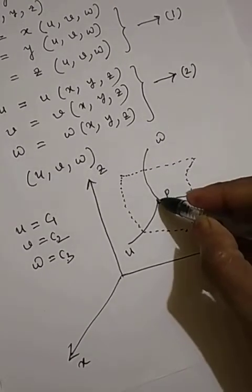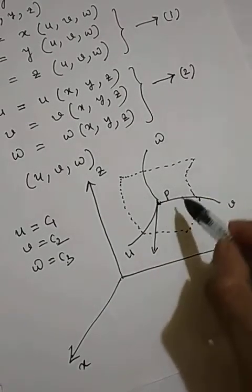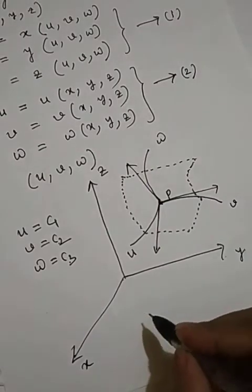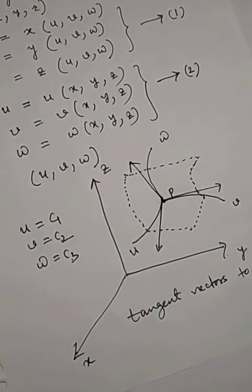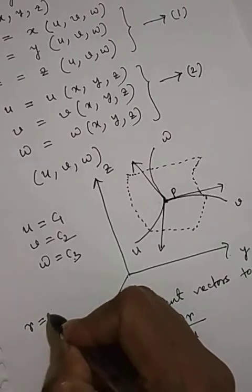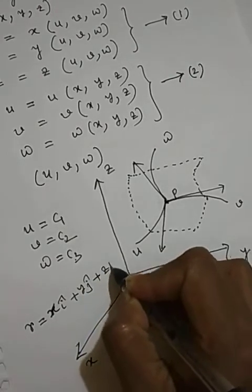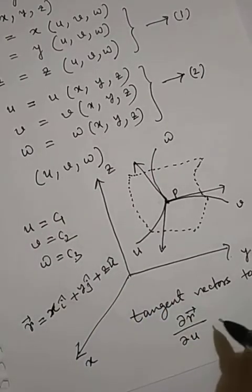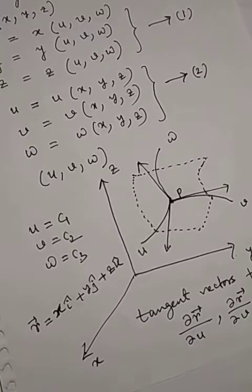Now let us take the tangent vectors at u, at v, and at w. So the tangent vectors to u, v, w are del r / del u, del r / del v, and del r / del w, where r is the position vector of P.